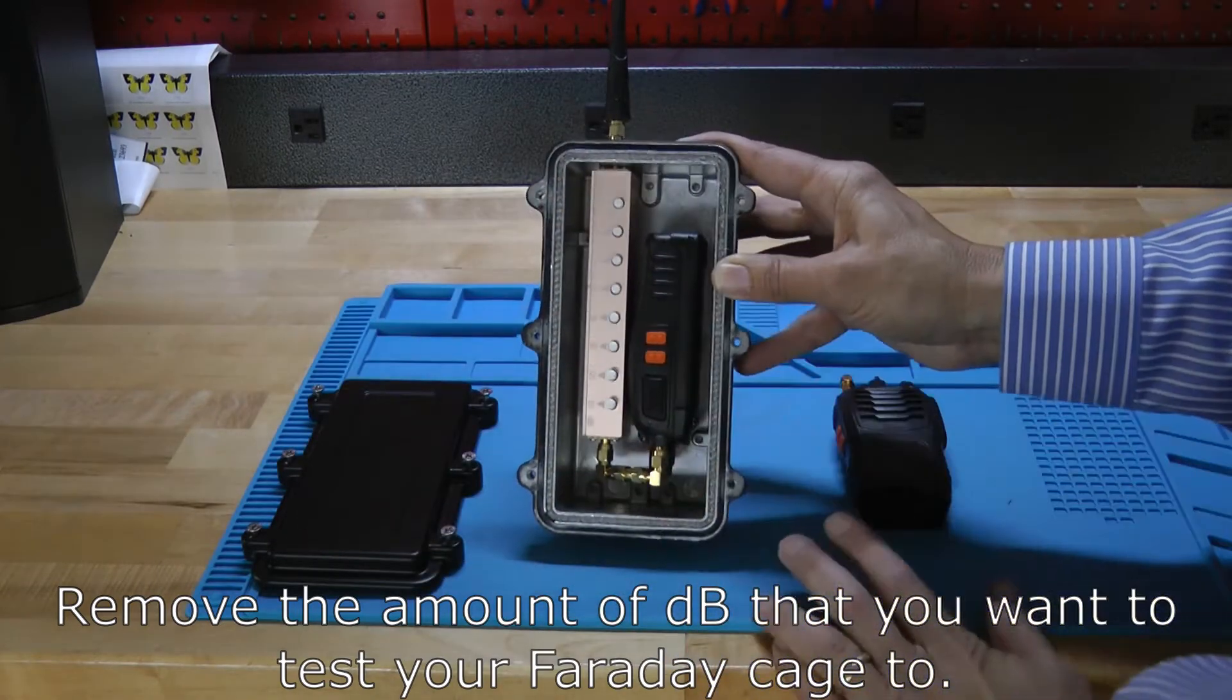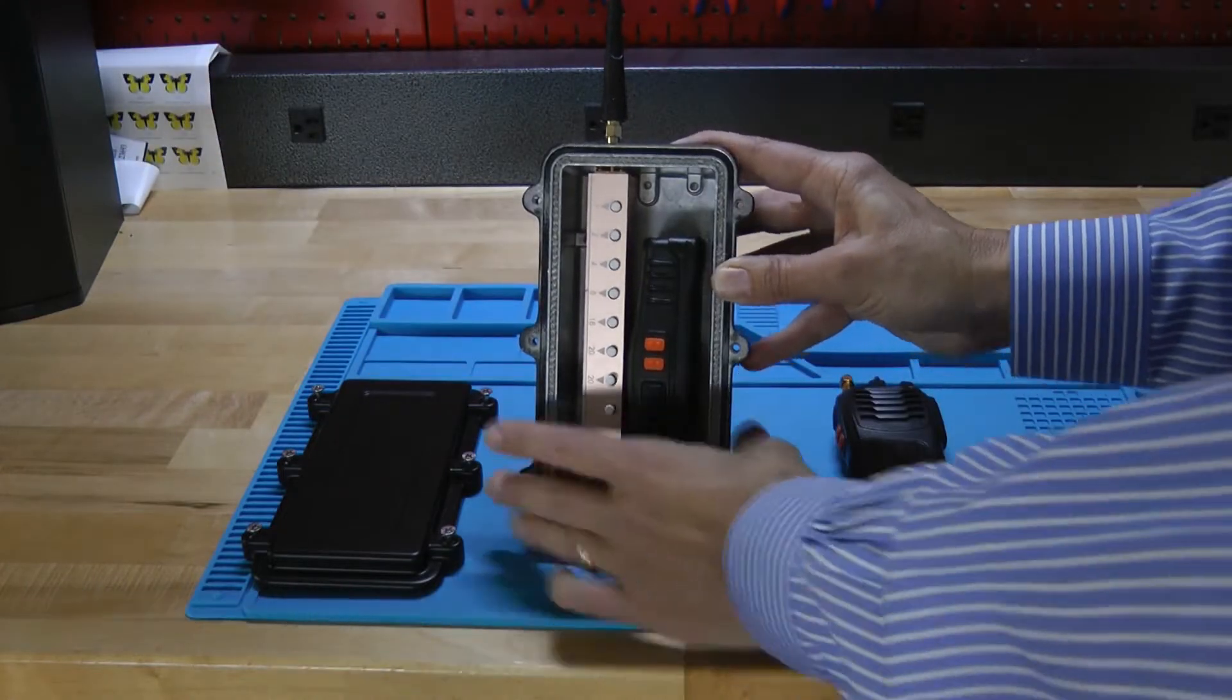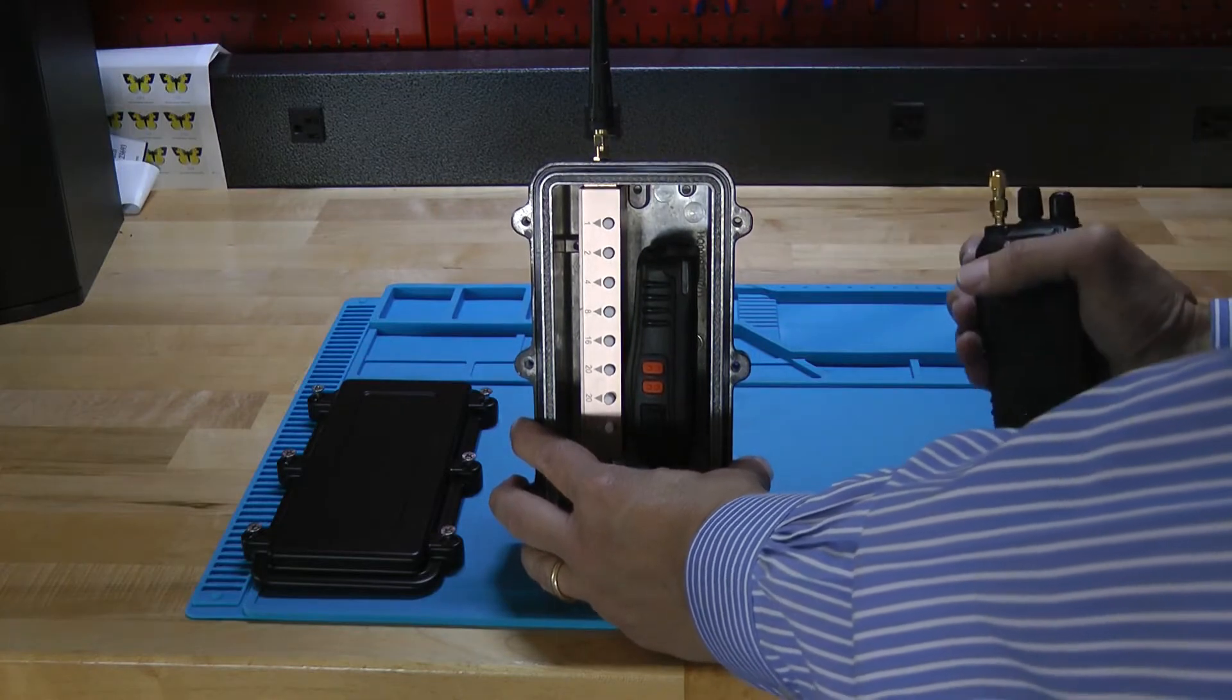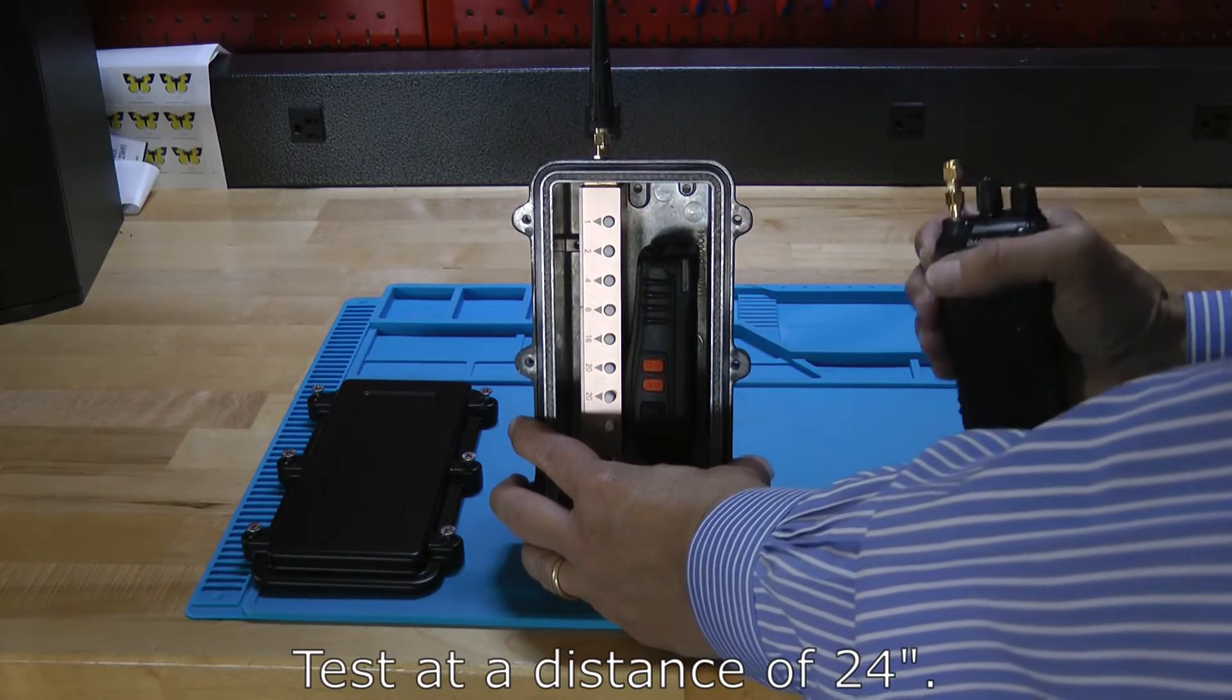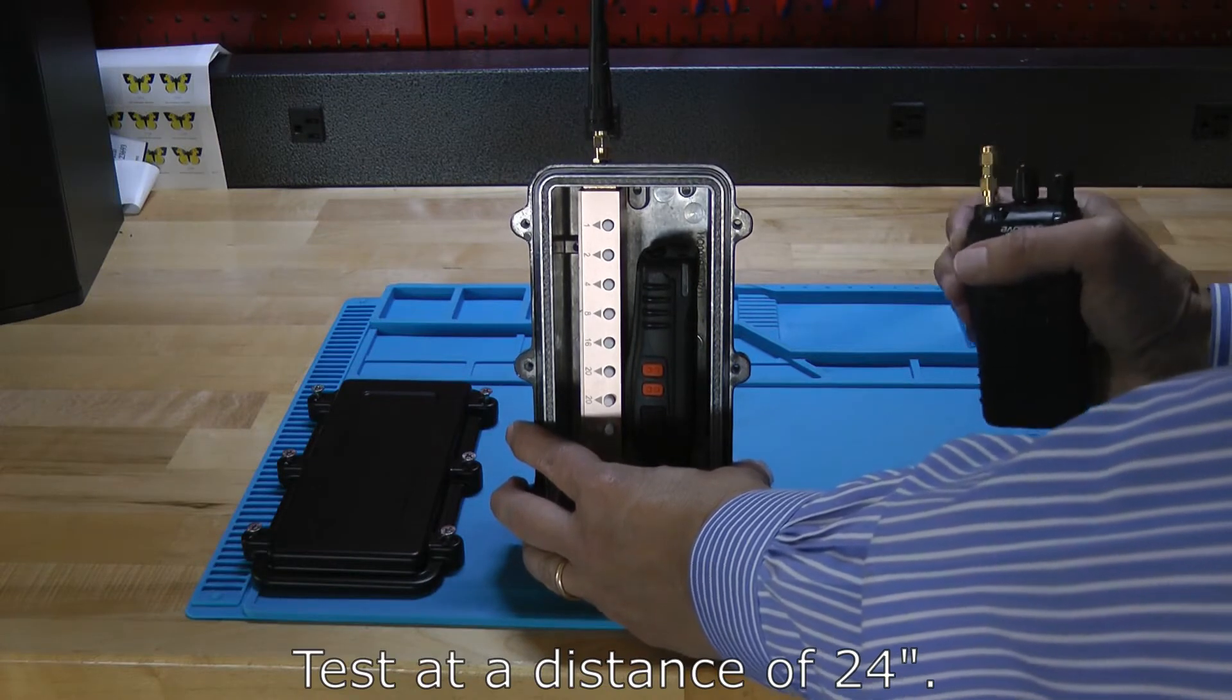Then I button up the box after everything's turned on, I button it up, I put it inside of the enclosure, I turn on the transmit radio and I see if I can get the receive radio to turn on. I do the test at 24 inches distance. It's important to be at two feet distance, give or take an inch or two.